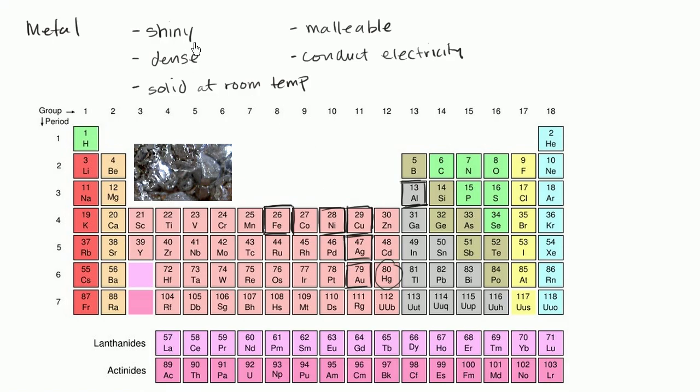So given that these are some of the properties that we associate with metals, let's think about what's happening at the atomic level to give these elements these properties. The way I think about it, let's just go with copper for a second. Let's just imagine a block of copper at the atomic level.